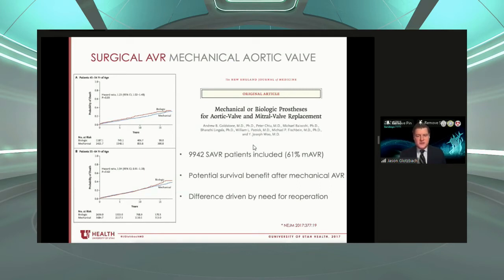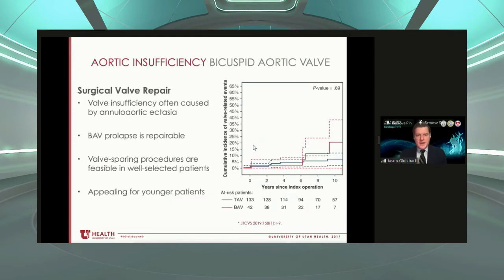There is some evidence that mechanical valves, if you look over many decades, may have a slight survival advantage over biologic valves. These data need to be interpreted carefully because they are largely historical and predate the transcatheter era. Valve-in-valve transcatheter replacement is bringing down the risk of re-operation for biologic valves. Aortic valve repair is also something to consider, especially in patients with primary aortic insufficiency rather than aortic stenosis — these patients often have annular aortic ectasia or a dilated aortic root, and a valve-sparing approach is possible even with a bicuspid aortic valve.